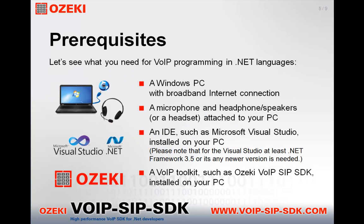Let's see what you need for VoIP programming in .NET languages. A Windows PC with broadband internet connection. A microphone and headphone or speakers or a headset attached to your PC. An IDE such as Microsoft Visual Studio installed on your PC. Please note that for Visual Studio at least .NET Framework 3.5 or any newer version is needed. A VoIP toolkit such as Ozaki VoIP SIP SDK installed on your PC is also a requirement.